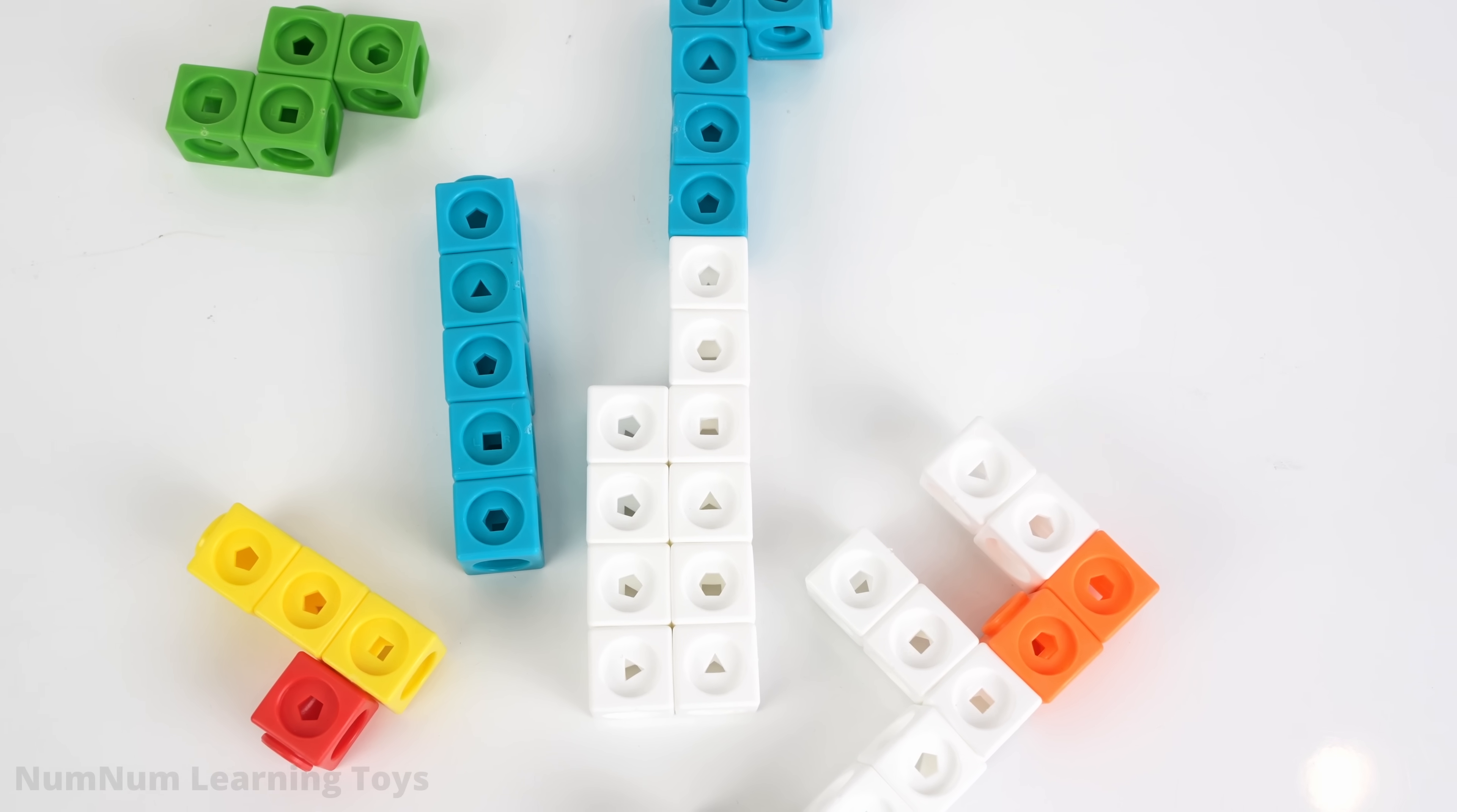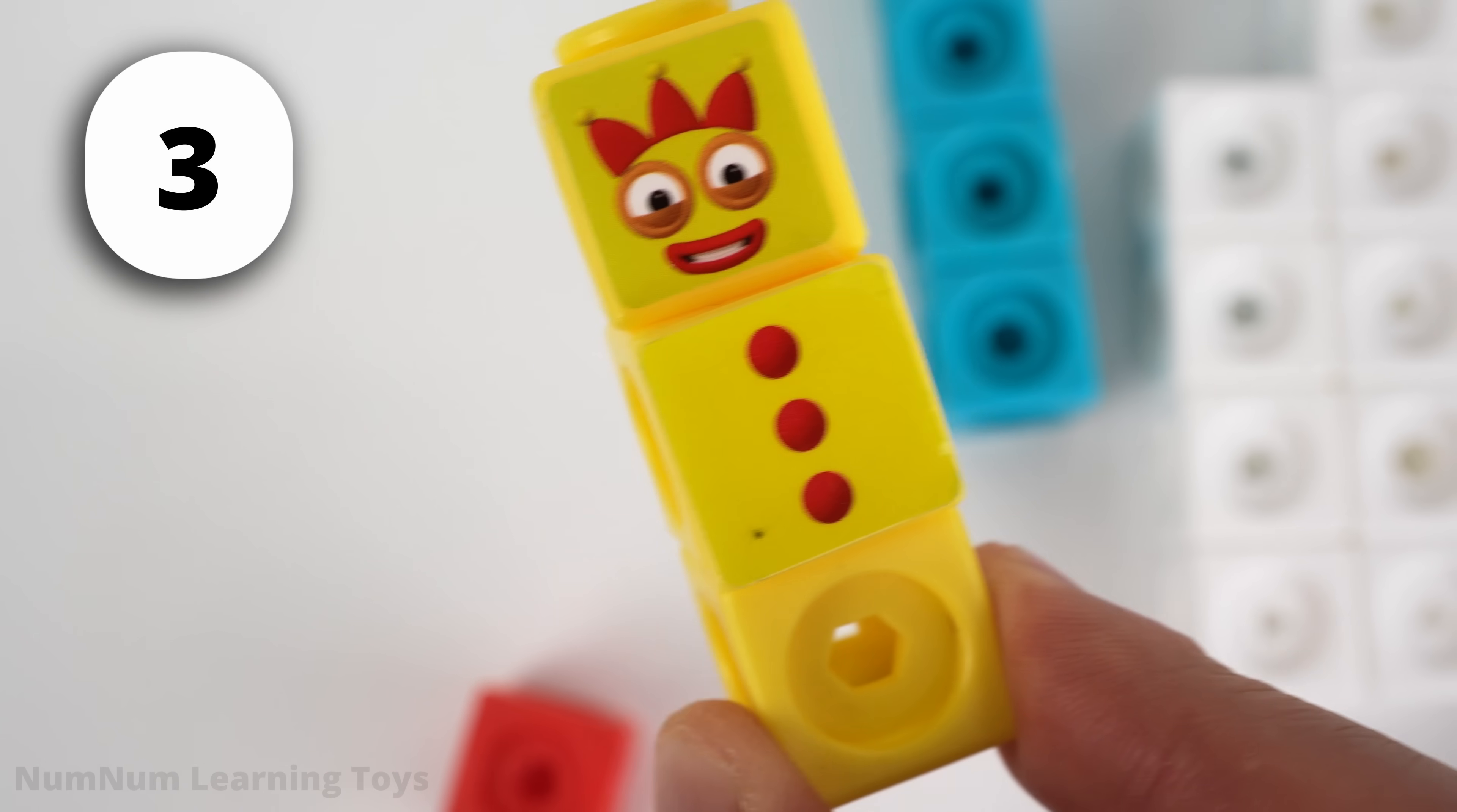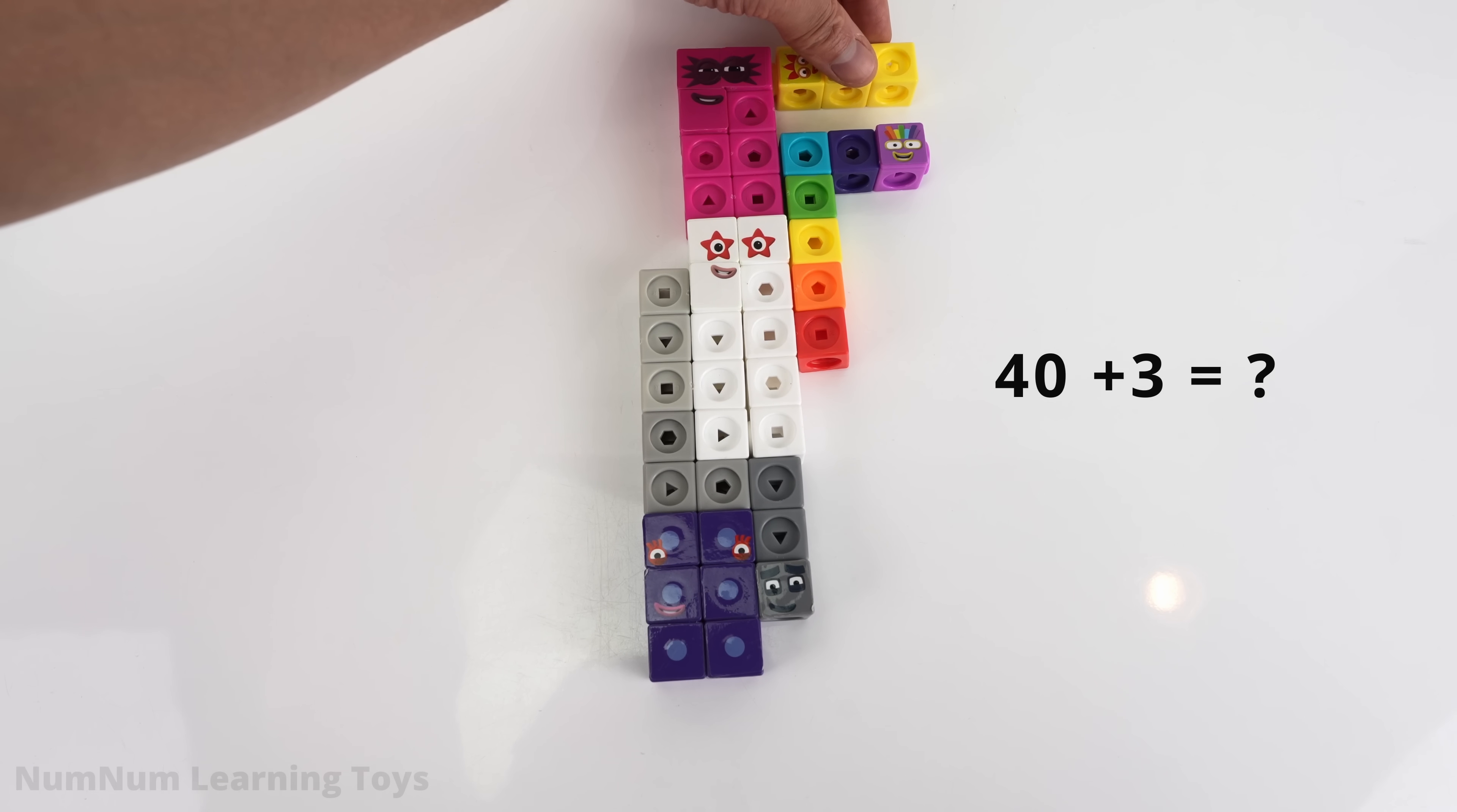This number block is the color of the sun. Yellow! Do you know who it is? It's number 3! We put together 40 blocks, and now we're going to add 3 more. What number do we get? 43!